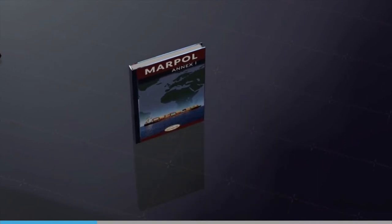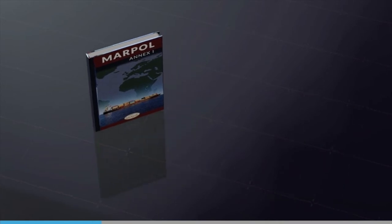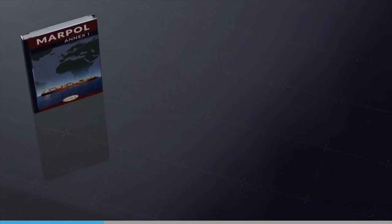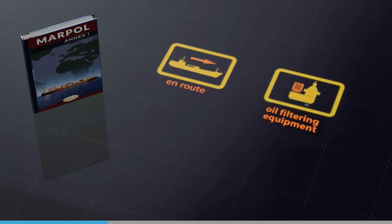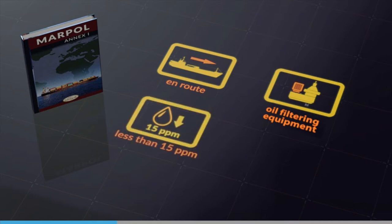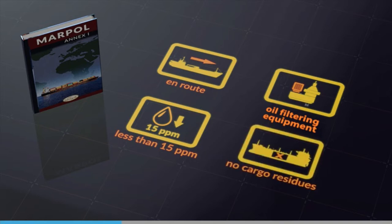For a vessel above 400 GRT, machinery space discharge outside a special area is allowed when: the ship is proceeding en route; the oily mixture is processed through oil filtering equipment meeting the requirements contained in Annex 1; the oil content of the effluent without dilution does not exceed 15 ppm; the oily mixture does not originate from cargo pump room bilges on oil tankers; and the oily mixture, in case of oil tankers, is not mixed with oil cargo residues.